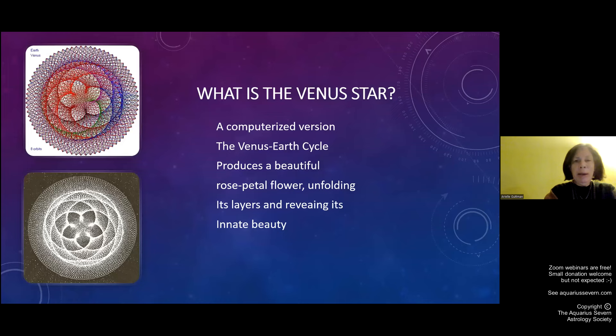So what is the Venus star? This is actually a computerized version of the Venus Earth cycle, which produces a beautiful rose-like flower, rose-petaled flower, unfolding its layers and revealing its innate beauty. But you can see on the inside that there are like five petals and these five petals on the inside are representative of the five points of the star or the pentagram that the Venus star creates in an eight-year time period. And there are actually two full stars in eight years, not just one. There's a full morning star set and a full evening star set created in an eight-year time period. So really two stars overlaid on each other. Same degrees, same signs, same positions, but different phases. One's a morning star set, one's an evening star set.